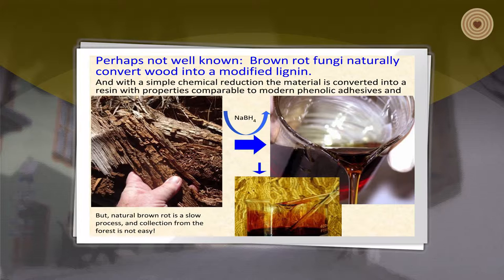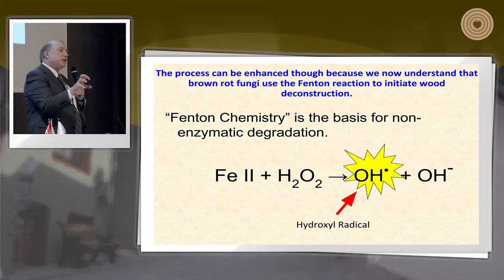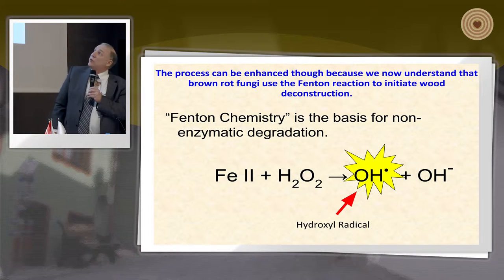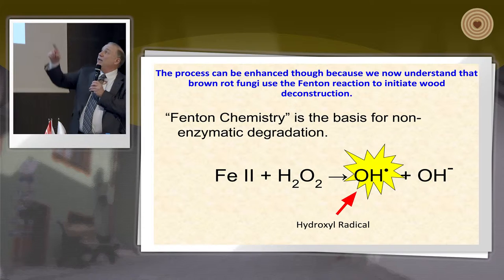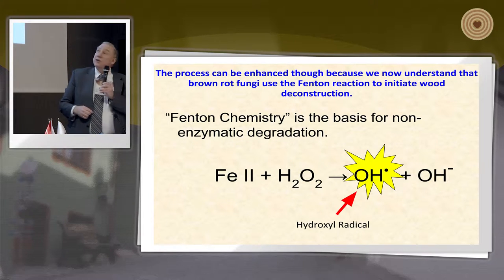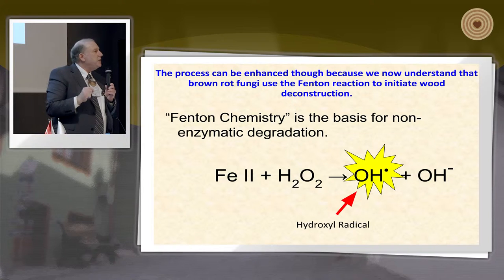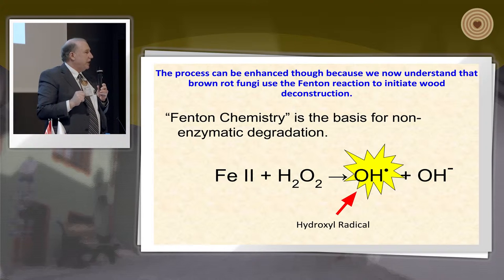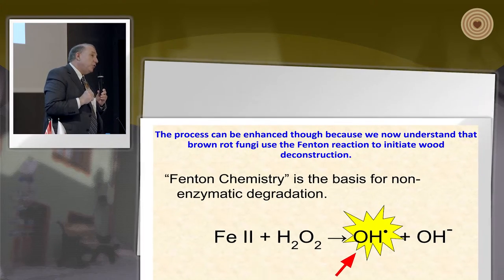The problem is that natural brown rot is a relatively slow process and difficult to collect. But if we understand the process of brown rot, we can borrow the chemistries that the brown rot fungi use. We now understand that reduced iron (Fe²⁺) and hydrogen peroxide (H₂O₂) are produced by decay fungi, and when you combine those, a hydroxyl radical is produced — the most potent oxidizing agent in biological systems. If we generate the hydroxyl radical at the nanoscale next to wood surfaces, we can deconstruct the wood.